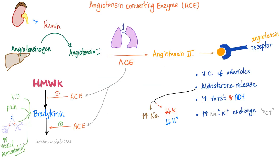Angiotensin-converting enzyme. Let's talk about the enzyme before we inhibit it. Renin comes from the kidney, which converts angiotensinogen from the liver into angiotensin-1. ACE, coming from the lung as well as the endothelium, converts angiotensin-1 into angiotensin-2, which acts on its receptor, leading to vasoconstriction of arterioles, raising the blood pressure.